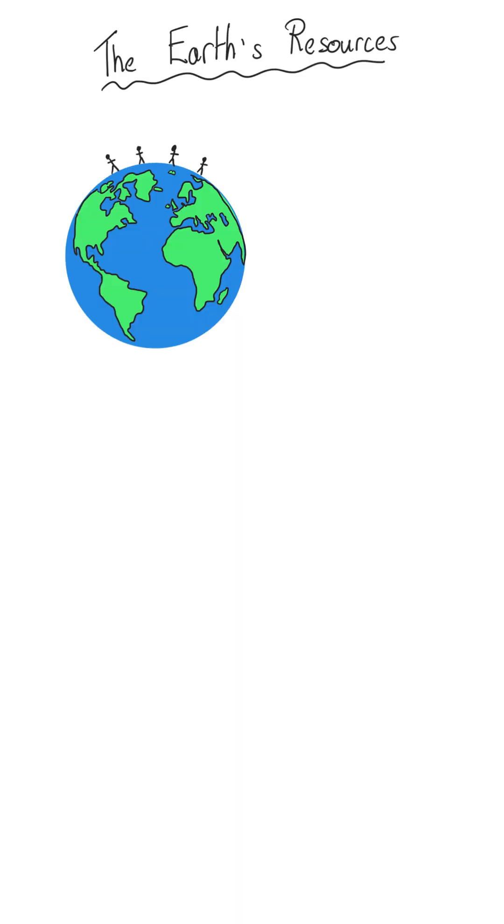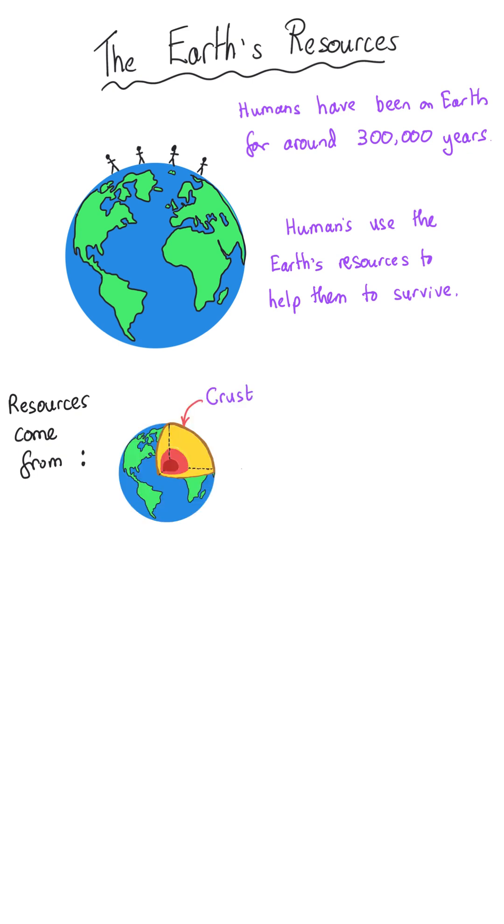Humans have been around on Earth for around 300,000 years and in that time they've been using the resources from the Earth to help them to survive. These resources have predominantly come from the Earth's crust but additionally resources have been taken from the seas and oceans and from the air as well.